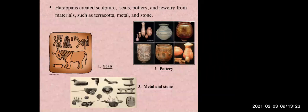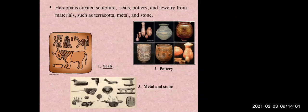The Harappans created sculptures, seals, pottery, and jewelry from materials such as terracotta, metal, and stone. The word 'seals' refers to a device that makes an impression in paper, wax, clay, or any other medium. In the second picture you can see different kinds of pottery, and in the third picture some metal objects that were made by the Harappans.